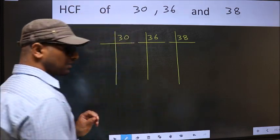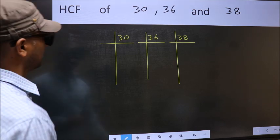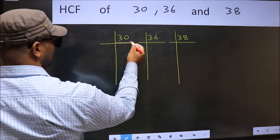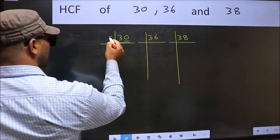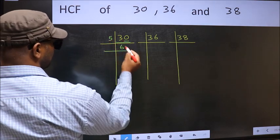This is your step 1. Next, in this number, last digit 0 so take 5. When do we get 30 in 5 table? 5 times 6 is 30.